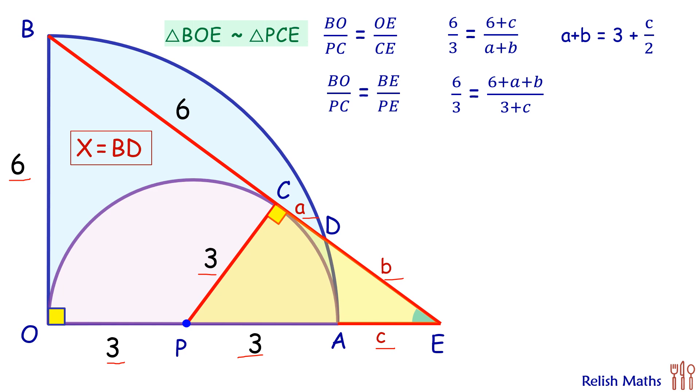Now here to solve it further we'll put this value of A plus B in this equation. So this equation will be simplified in form of C only and then we'll solve it to get value of C as 2 centimeters. Now this value of C we can put in this equation to get A plus B as 4 centimeters.